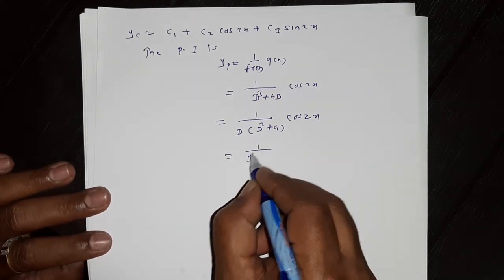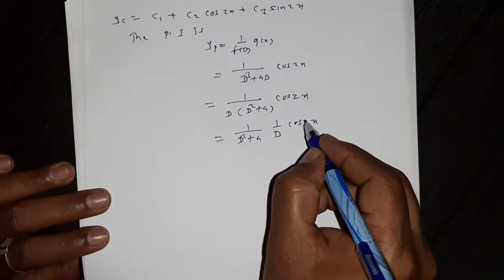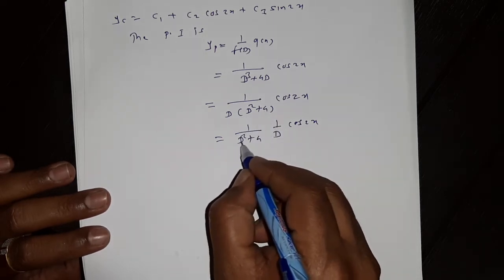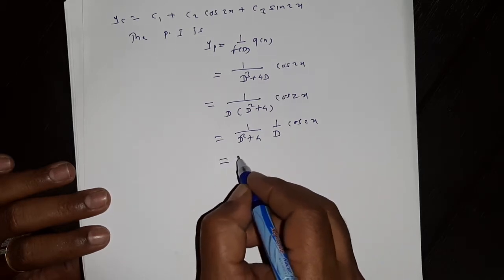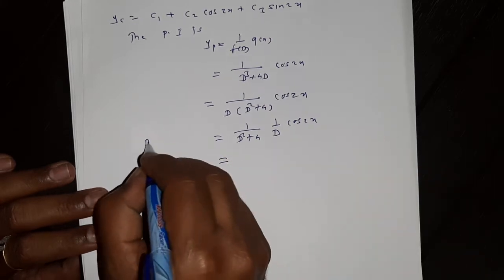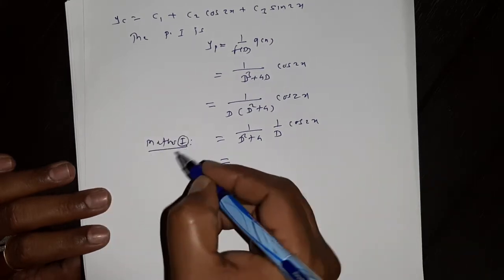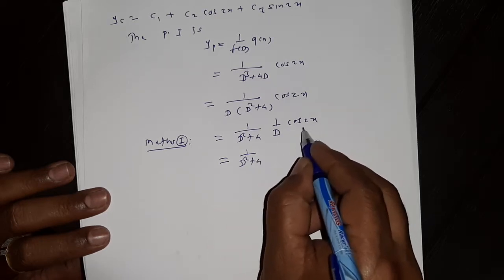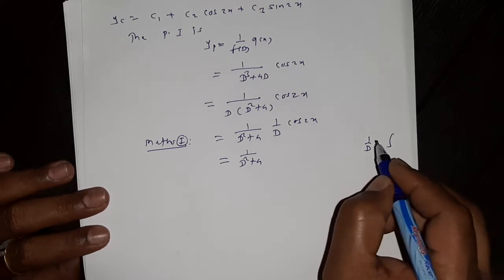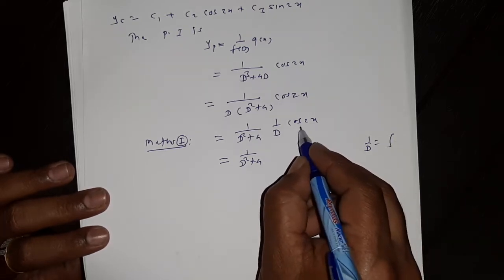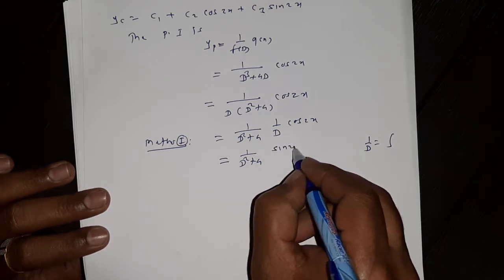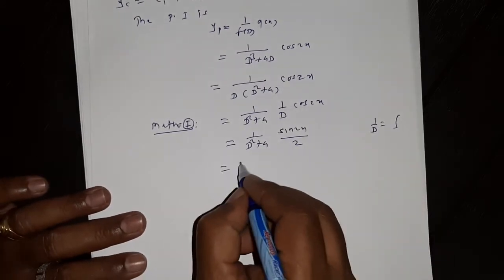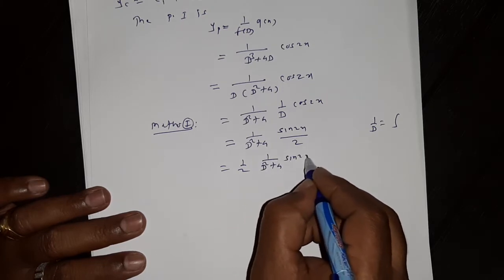This gives 1/(D² + 4) · [1/D · cos(2x)]. We can solve this using two methods. Method 1: apply 1/D first. Since 1/D means integration, 1/D of cos(2x) = sin(2x)/2. So we have (1/2) · 1/(D² + 4) · sin(2x). Then apply the rule: 1/(D² + a²) · sin(ax) = -x/(2a) · cos(ax).